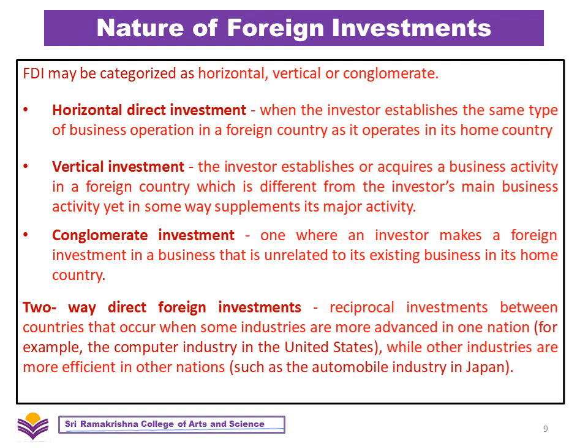Conglomerate investment is one where an investor makes a foreign investment in a business that is unrelated to its existing business in its home country. This is often in the form of a joint venture with a foreign firm already operating in the industry, since the investor has no previous experience. Two-way direct foreign investment refers to reciprocal investments between countries that occur when some industries are more advanced in one nation while others are more efficient in other nations. This is primarily a protection measure to ensure investment between two or more countries is balanced, and is more common in the case of customs unions and trade unions.